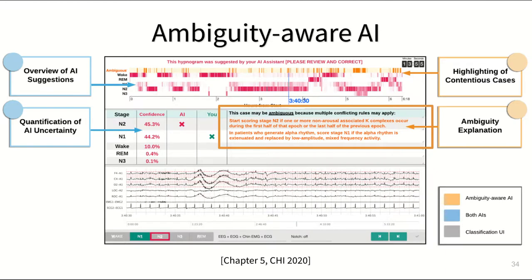To investigate this question, we added noise to ambiguity explanations by replacing some of the arguments with random other arguments from the medical guidelines. So in some way, we turned some of the real-world and high-quality ambiguity explanations into more noisy versions that were slightly less relevant to the ambiguous case at hand.